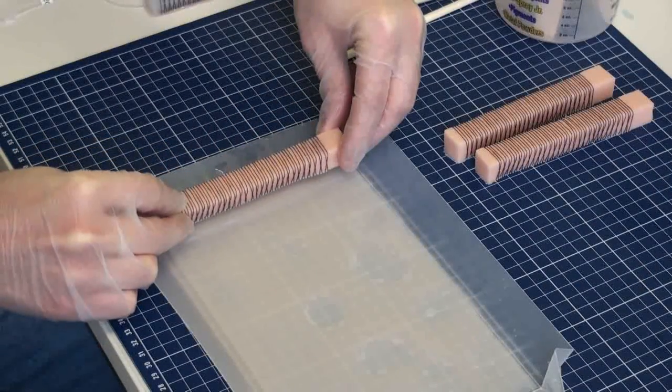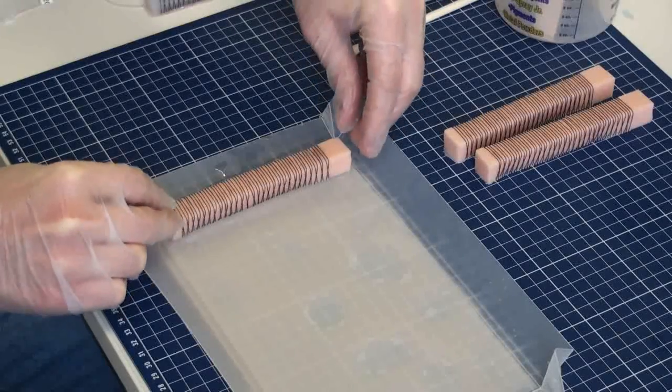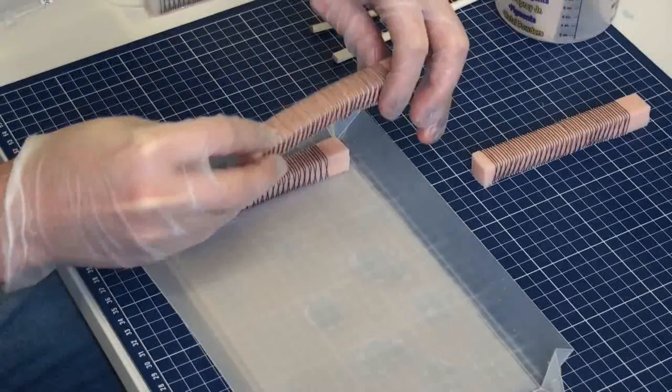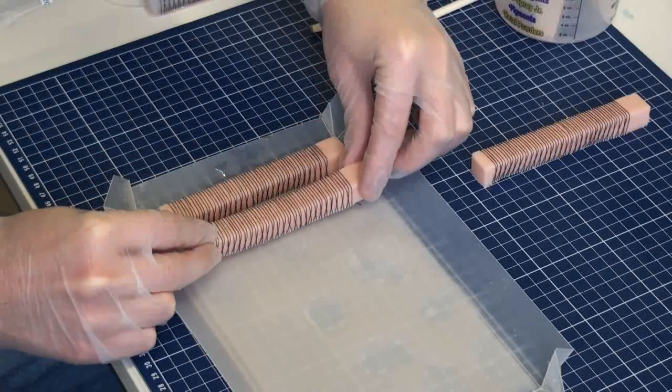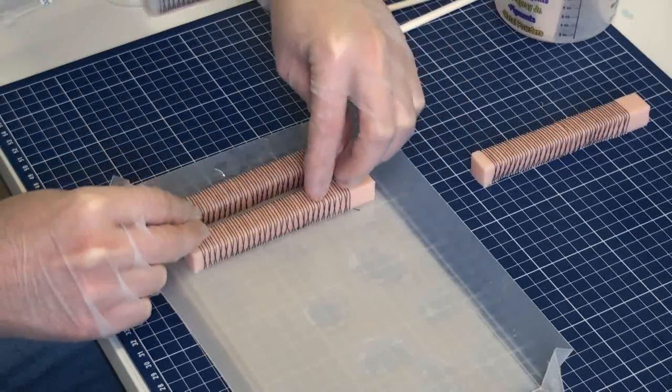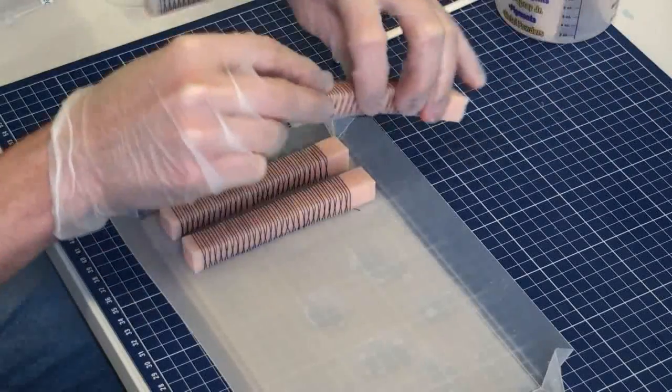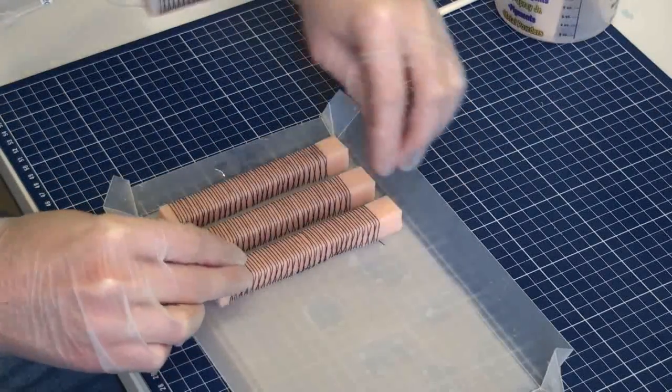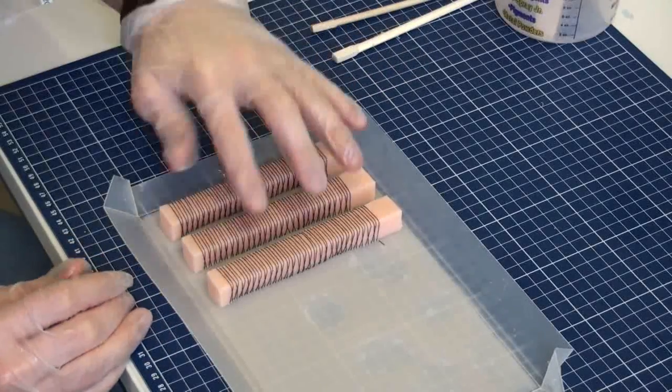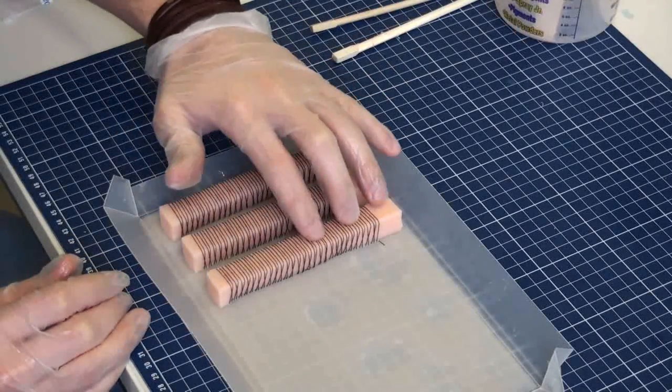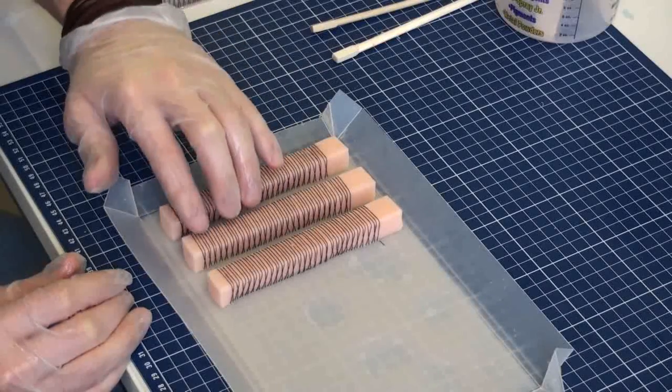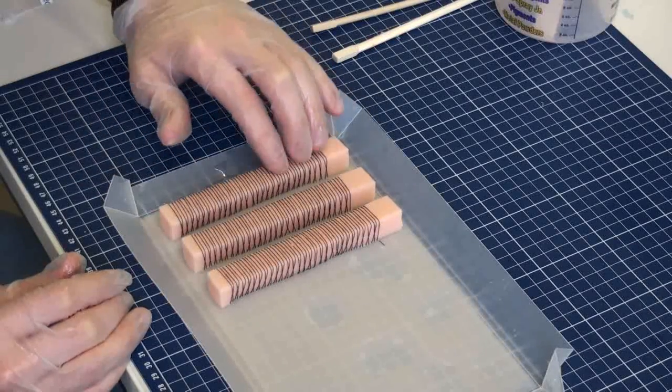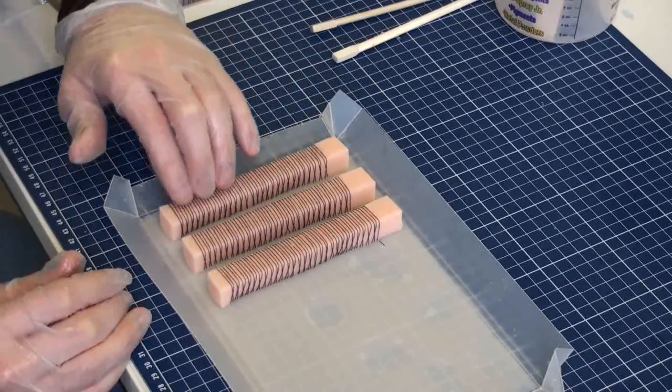Before the silicone cures, we put the active layer on the passive layer to glue them together. We then let it cure overnight again.